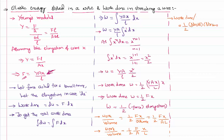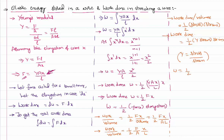This means the total work done equals one-half times stress times strain times volume. We can also express this using Young's modulus: since Young's modulus Y equals stress divided by strain, stress equals Y times strain. Substituting, work done per unit volume equals one-half times Y times strain squared. Alternatively, strain equals stress divided by Y, giving work done per unit volume equals one-half times stress squared divided by Y. In any of these formats, we can write the work done or energy stored in the wire. Thank you for watching — keep coming back for more lessons.